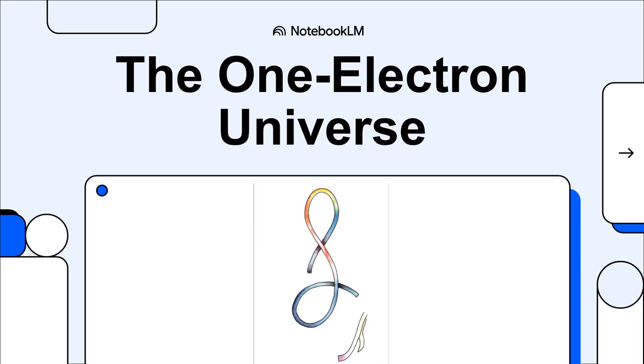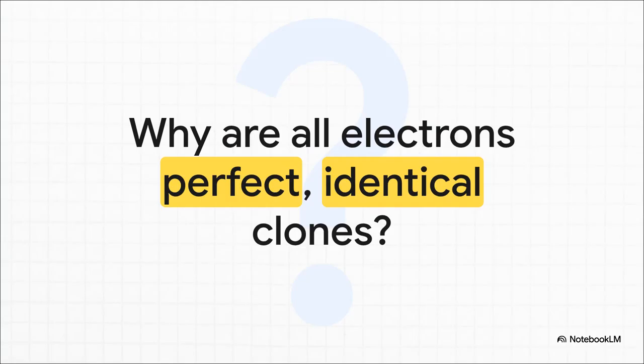Today, we are diving into one of the most audacious, elegant, and just plain wild ideas in the history of physics. It's a thought experiment so mind-bending that it suggests everything you see, everything you are, is made from just one single particle. This is the story of the one electron universe. So let's start with the puzzle that got this whole thing started. In our everyday world, no two things are ever truly identical.